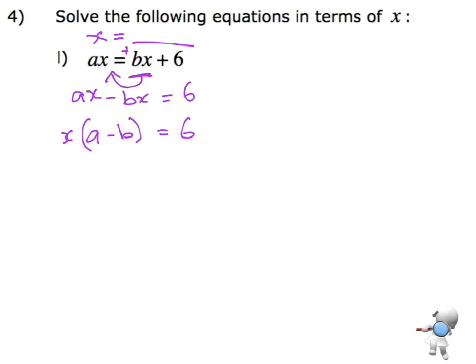If I expand that out, I'd get x times a, which is ax, minus x times b, which is bx. Now, I want to think, I'm trying to get the x by itself on the left. So the stuff in the brackets, I want to get rid of that. So at the moment it is being multiplied. The opposite of multiplying is to divide. And what I do to one side, I must do to the other.